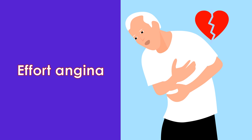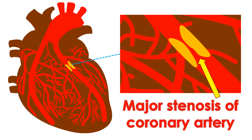The typical pain of cardiac origin is a central chest pain which occurs on walking or other forms of exercise, known as effort angina. This pain is caused by insufficient blood supply to a region of the myocardium. Effort angina is commonly due to significant obstruction to a coronary artery.